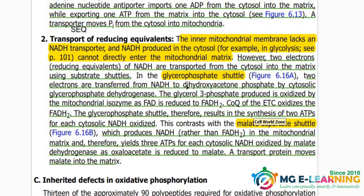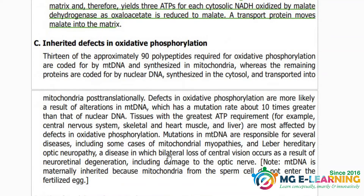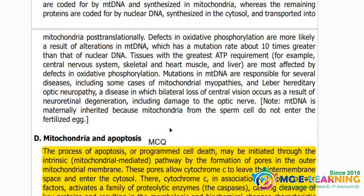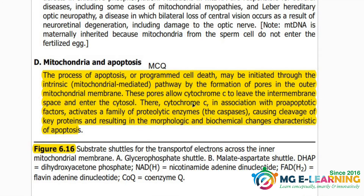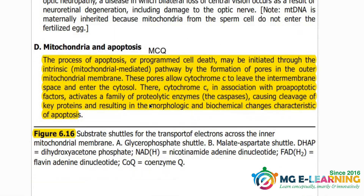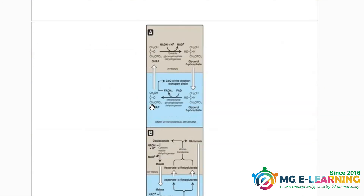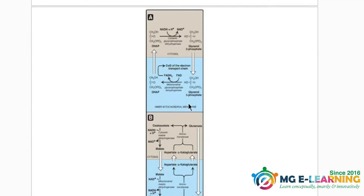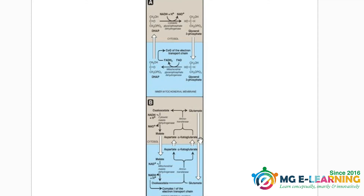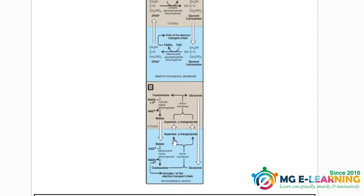Glycerophosphate shuttle and malate-aspartate shuttle — why they produce three and two ATPs — is important for SQ and MCQ. Mitochondria and apoptosis is important for MCQ. This figure is very important to see the shuttles — malate-aspartate shuttle and glycerophosphate shuttle.